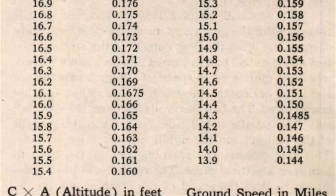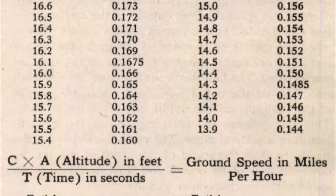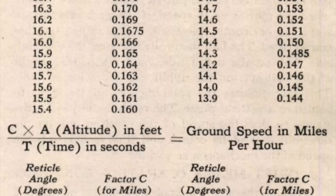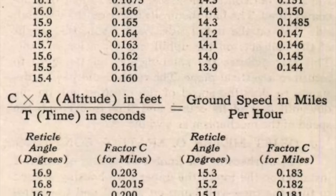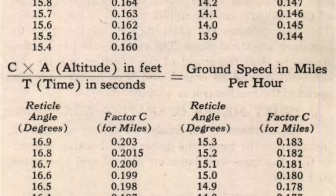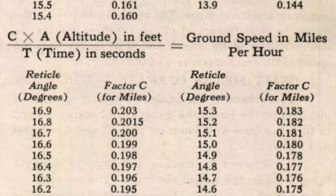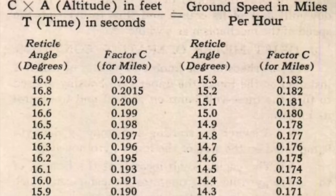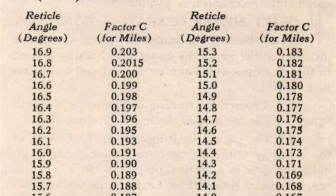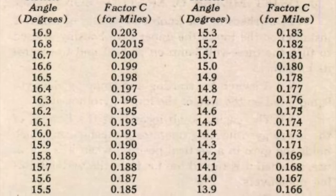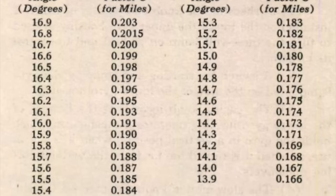Thankfully the manual for the B-3 provides a table of correction values to compensate for the angle of the prism. There are two types of these values. The k values are used to give your ground speed in knots while the c values are used to give your ground speed in miles per hour. For example if your index prism was set at 16.9 degrees your k factor for knots will be 0.176 whereas your c factor for miles per hour will be 0.203.